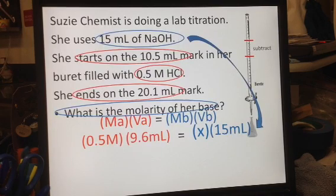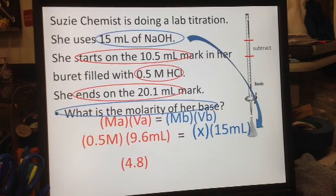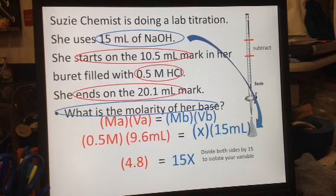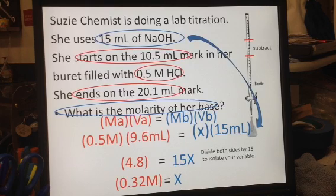To do this problem, I have to do a simple algebra problem. So 0.5 times 9.6 equals 4.8, and that's going to equal 15X. In order to isolate my X, I have to divide both sides by 15, and so I get 0.32 molar is what X is.